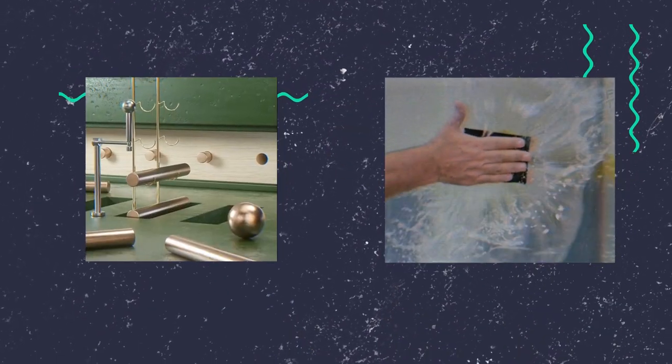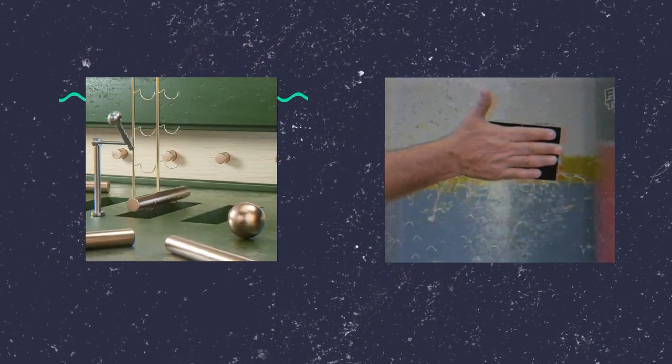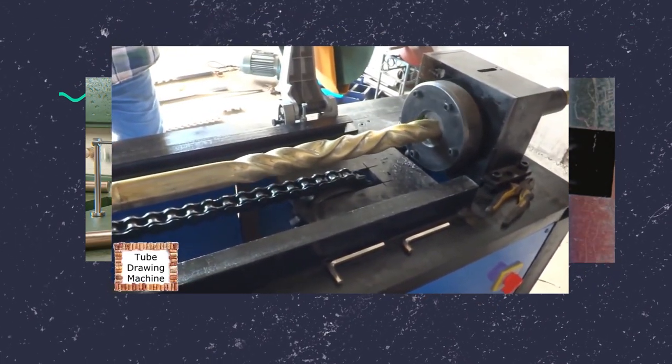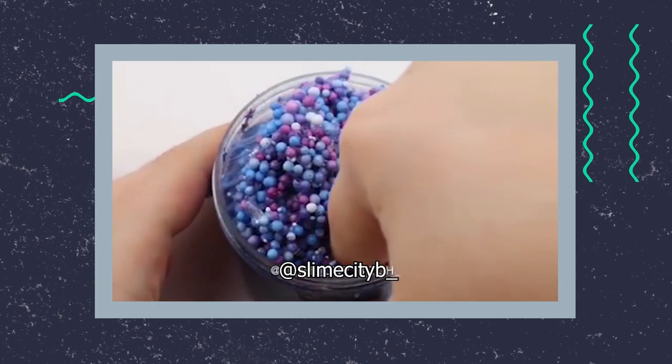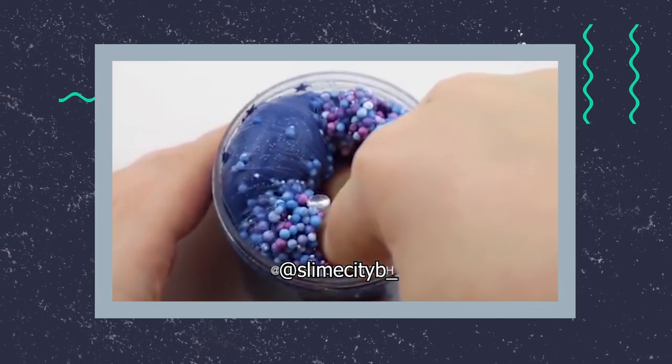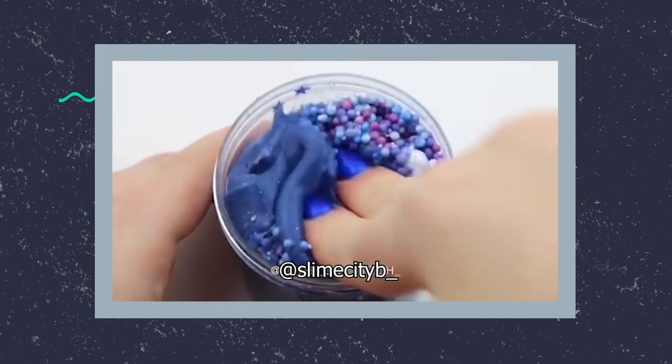You see it in animations, online, commercials, and occasionally you'll see it in real life. Most commonly with machines operating in this perfect way. A reason why these might be less common is because they're so much harder to produce. Slime became so popular most likely due to its cheap costs and how quickly you can make it.